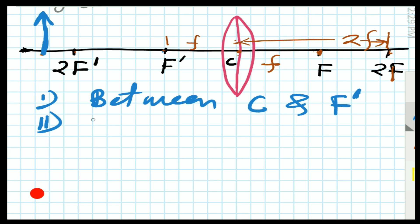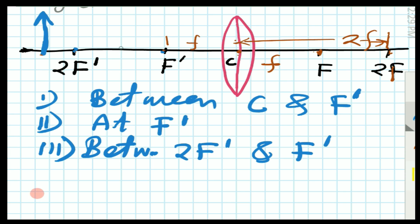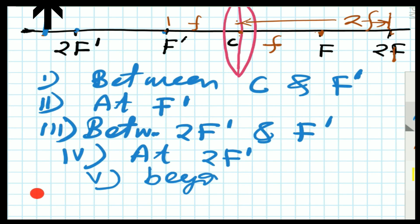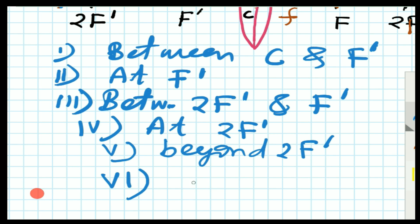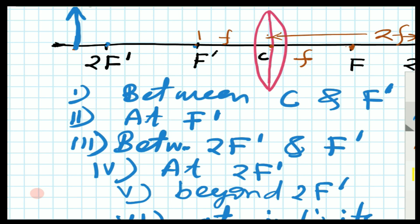For the second case, the object will be placed at F'. In the third case, the object will be placed between F' and 2F'. In the fourth case, the object will be placed exactly at 2F'. In the fifth case, the object will be placed beyond 2F'. And in the sixth case, the object will be placed at infinity. Now I am going to show you all these six cases one by one and write the properties of the image obtained in each instance.